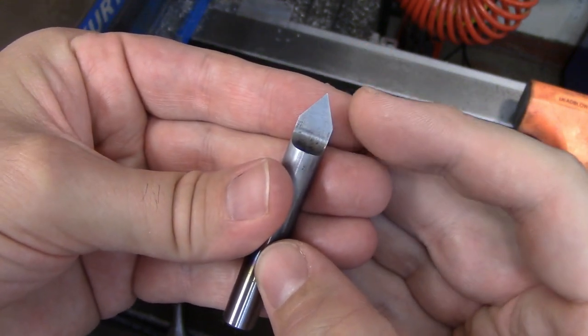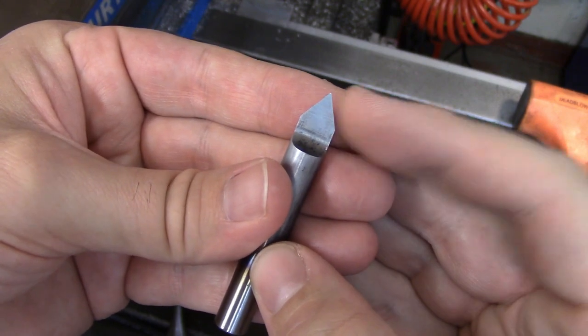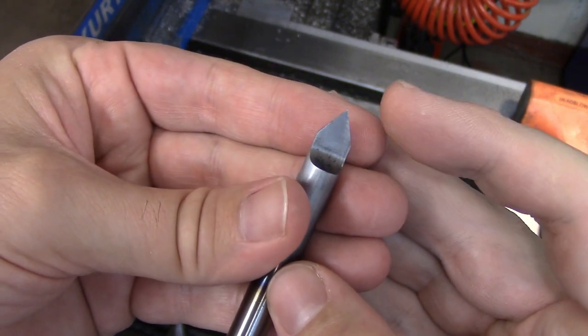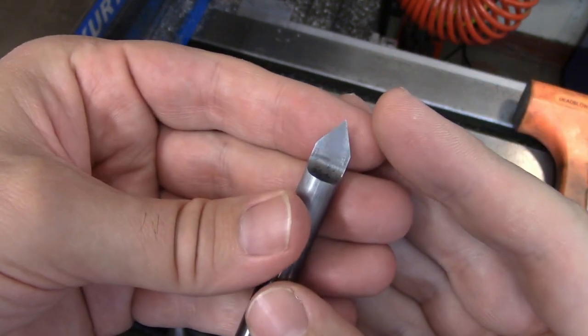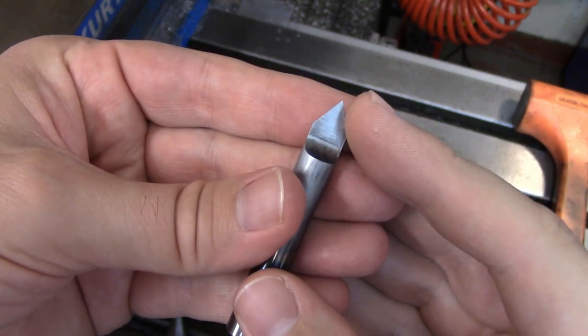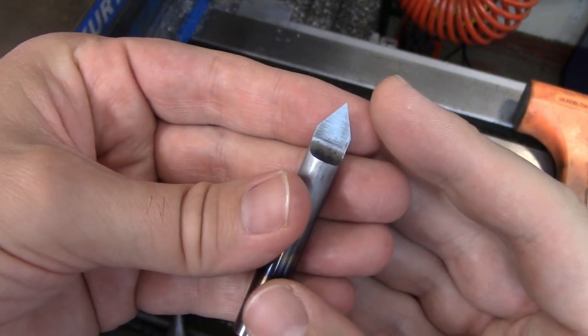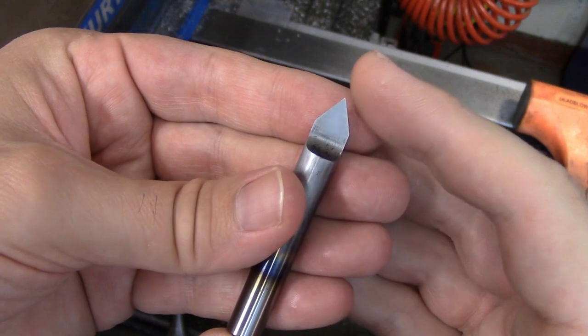If you wanted to, you could make this tool 45 degrees and you could use it for chamfering. You could make it any angle you want, of course. Maybe a shallower angle would be a more suitable engraving tool. This one left quite a few burrs.